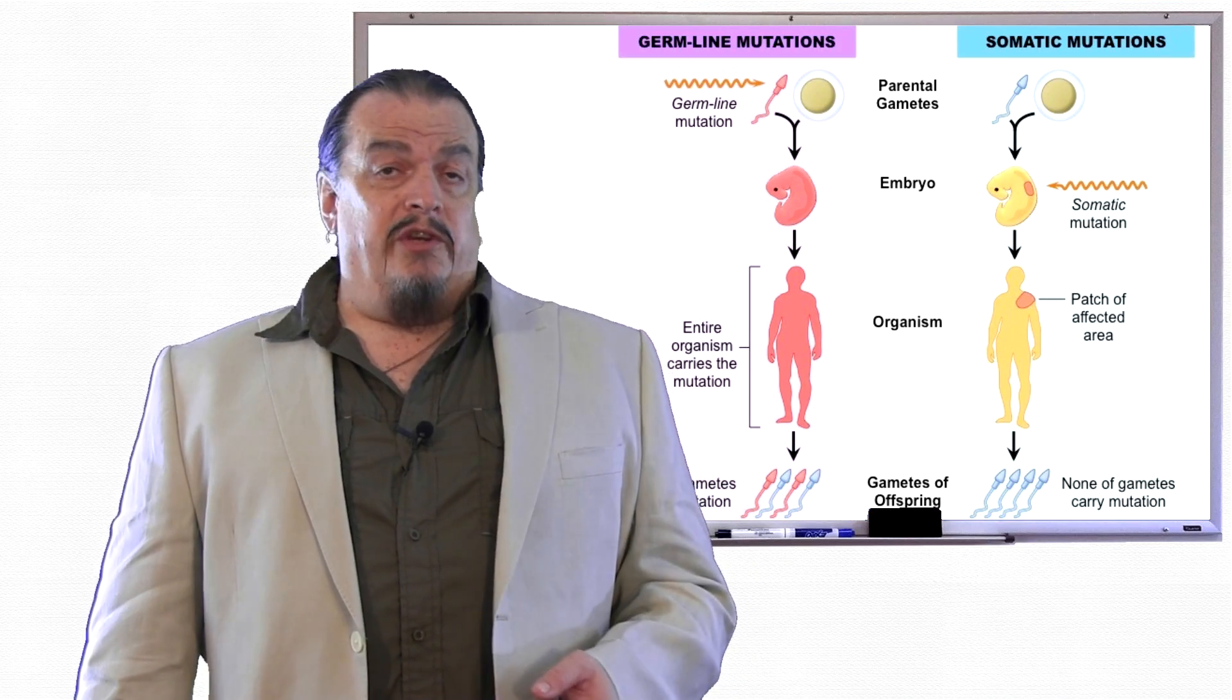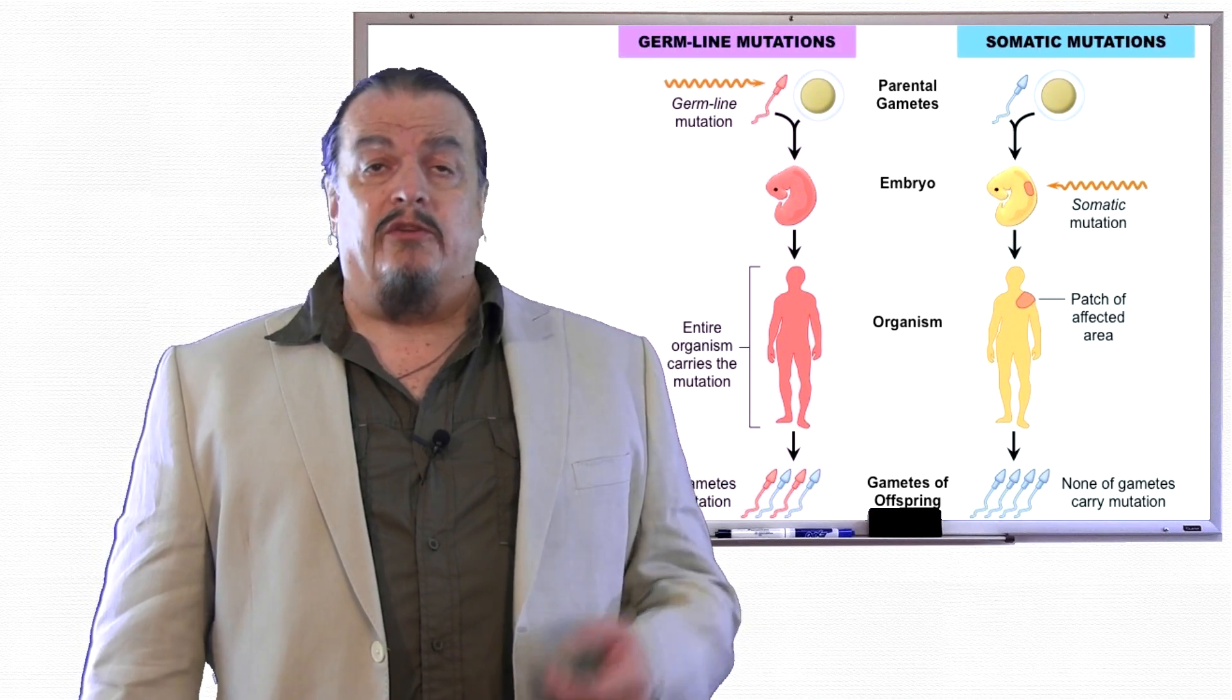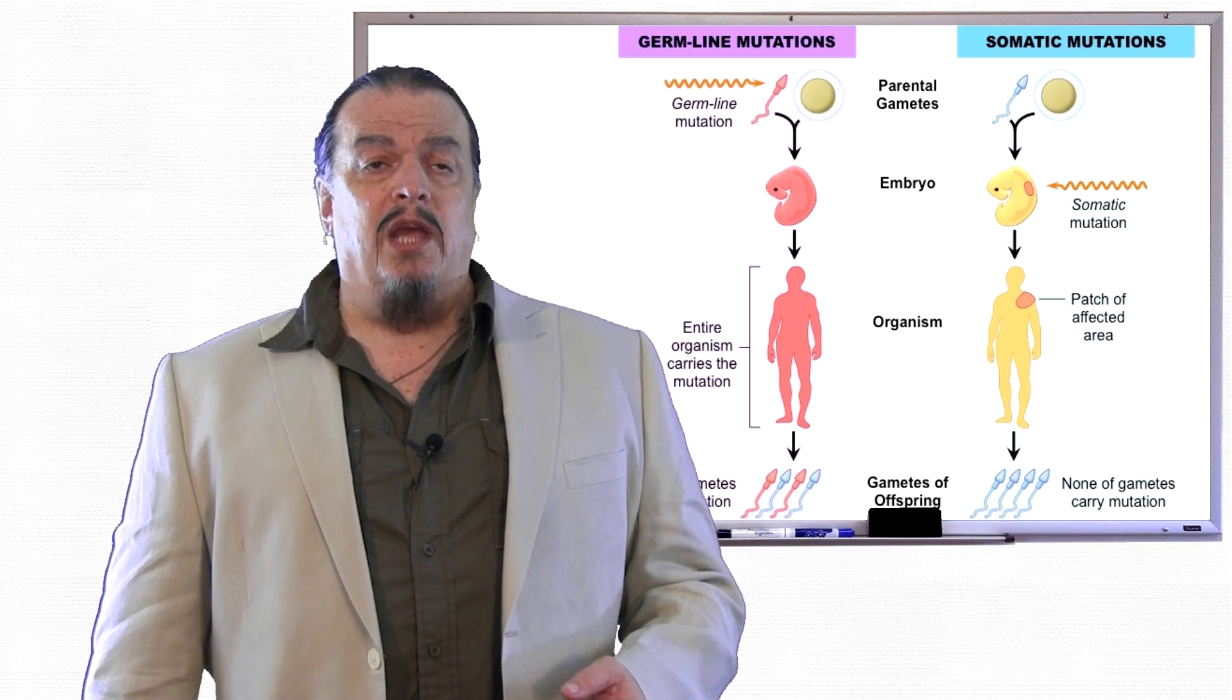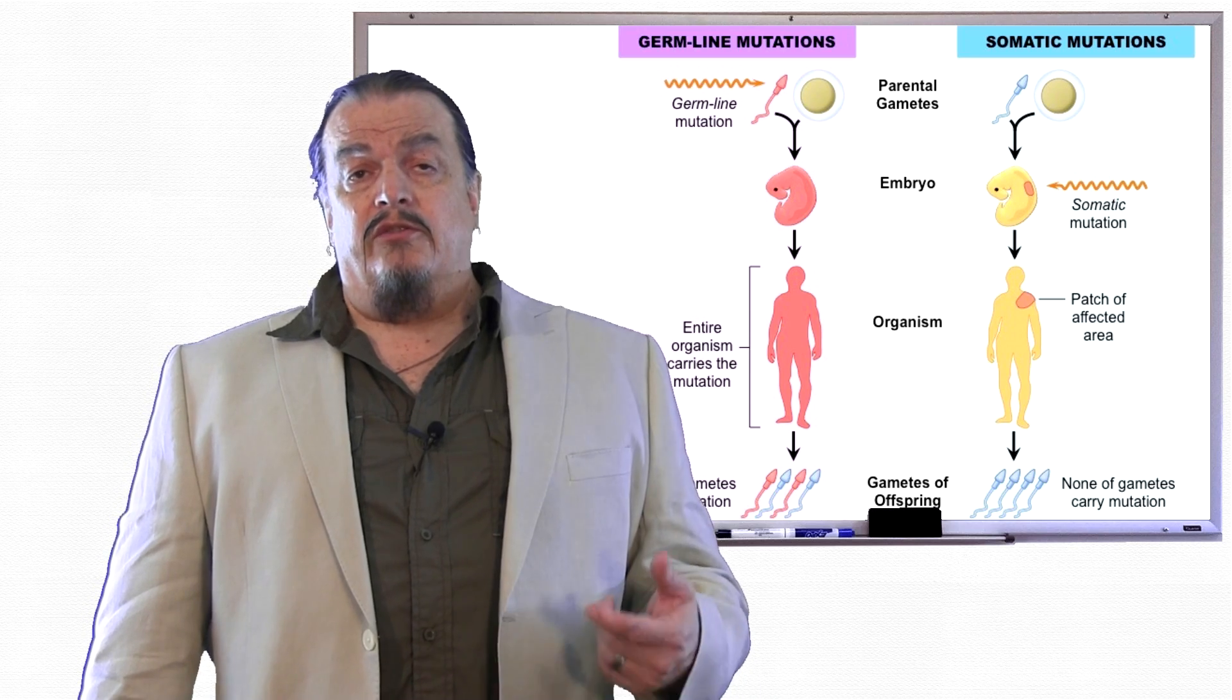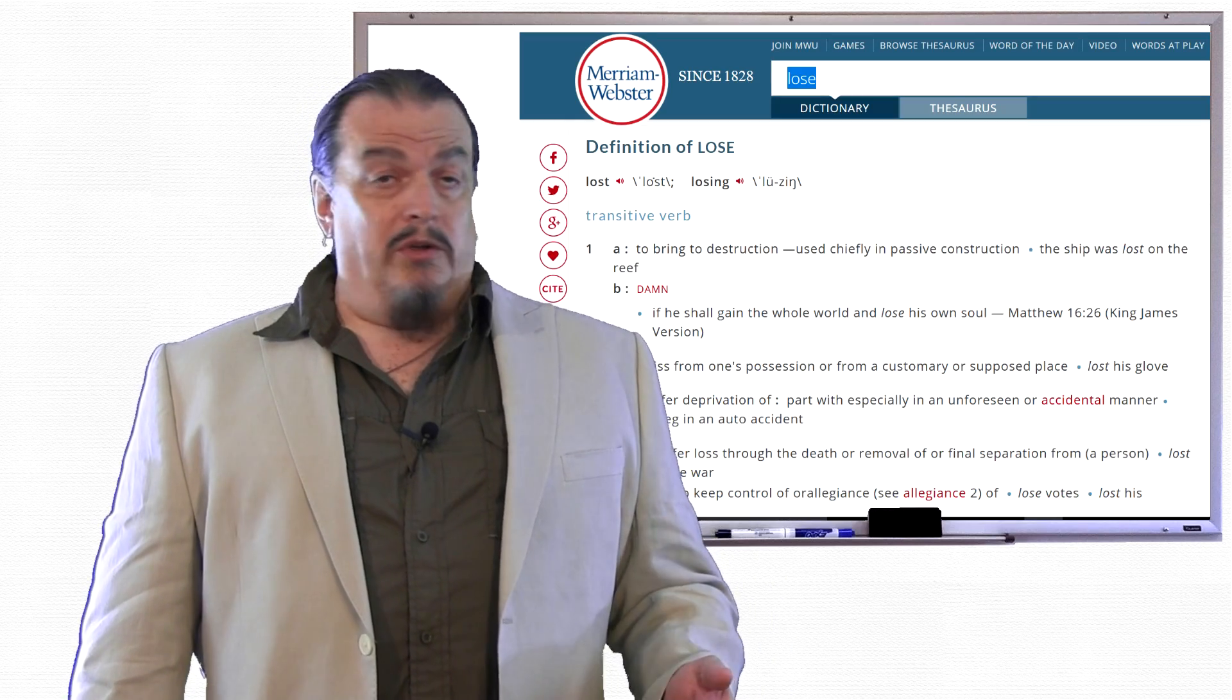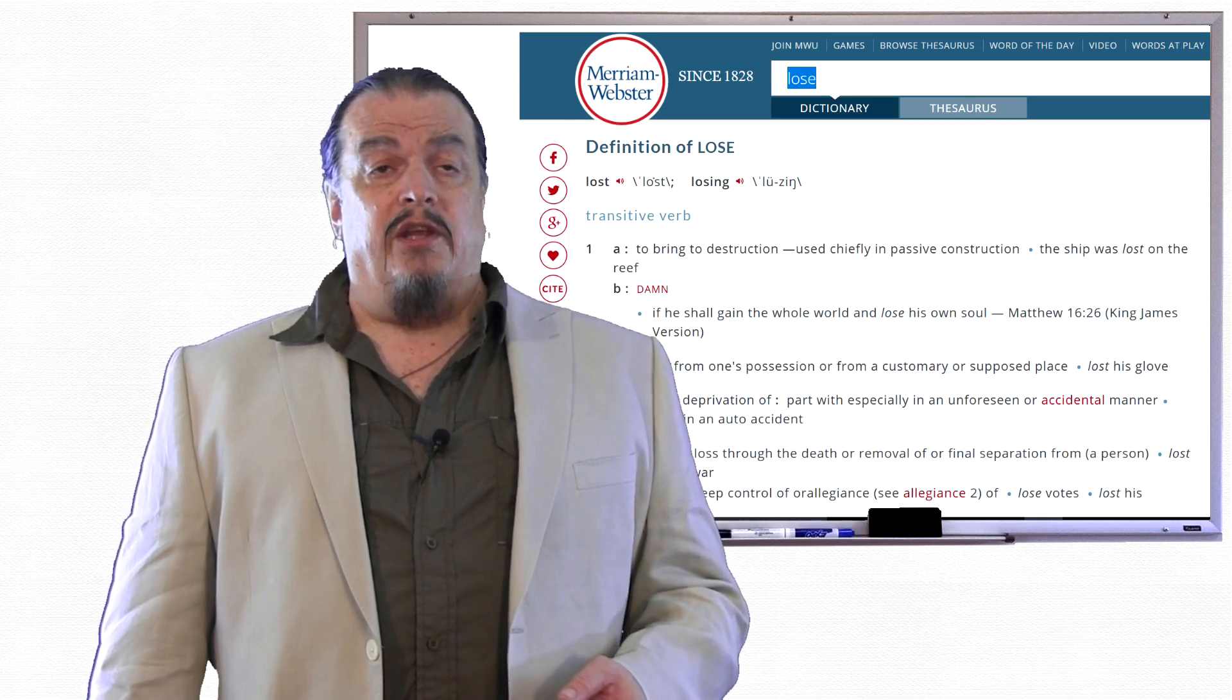Both the DNA in what scientists call your germline or sex cells that carry the information needed to spread your genes to your offspring, and your somatic, meaning body cells, are composed of letters that are symbols that mean something. In words, like loses, those letters stand for sounds.